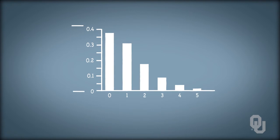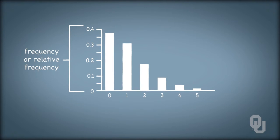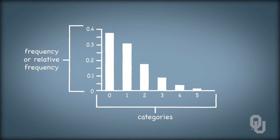A bar graph visualizes the frequency or relative frequency on the vertical axis for categories along the horizontal axis. Note that there is space in between the bars, suggesting that the horizontal axis is not continuous. This picture provides a good indication of the more frequent and less frequent categories making up a data set.